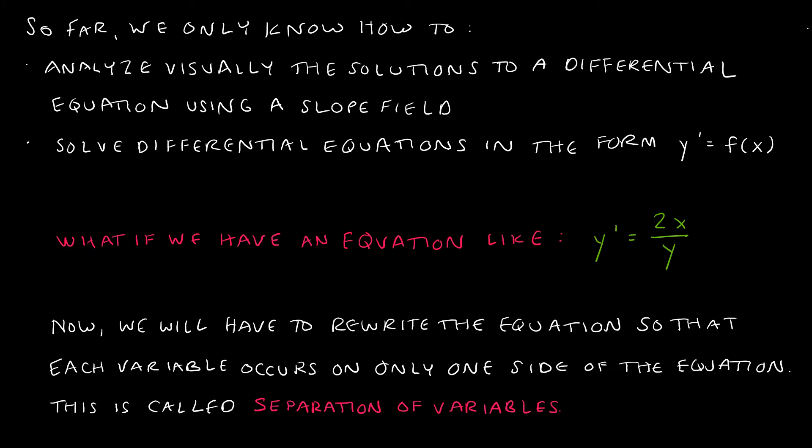So far with differential equations, we only know how to analyze solutions using a slope field, which we learned in section 6.1, and to solve differential equations already in the form y prime equals f of x. But if we have an equation like y prime equals 2x divided by y, we have y on each side of the equal sign, so we need a new strategy: rewriting the equation so each variable occurs on only one side. This is called separation of variables.